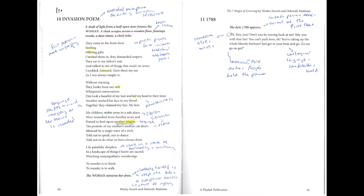Scene 10: Invasion Poem. A shaft of light from a half-open door frames the woman. A chair scrapes across a wooden floor. Footsteps recede. A door closes. A clock ticks. They come in the front door, smiling, offering gifts. I invited them in. They demanded respect. They sat in my father's seat and talked to me of things that made no sense. I nodded, listened, gave them my ear as I was always taught to.